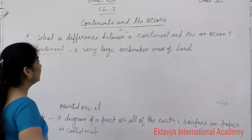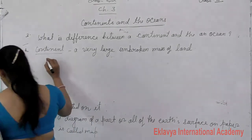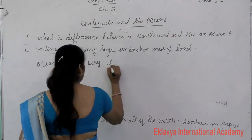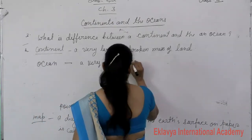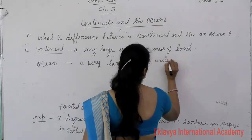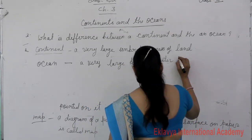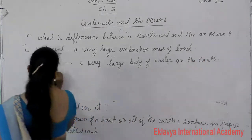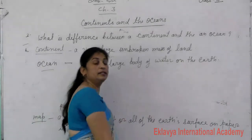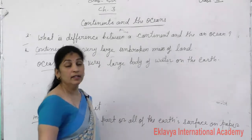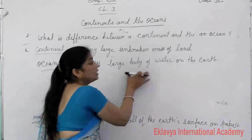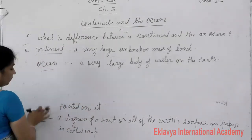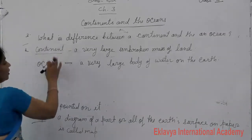A continent is a very large unbroken mass of land. Next is oceans. An ocean is a very large body of water on the earth. So the difference is: a continent is a large mass of land and an ocean is a large body of water.